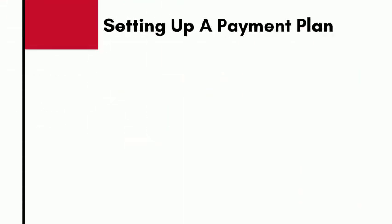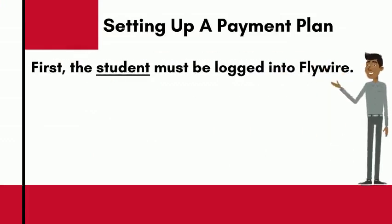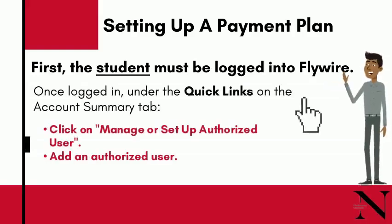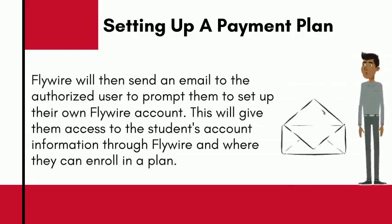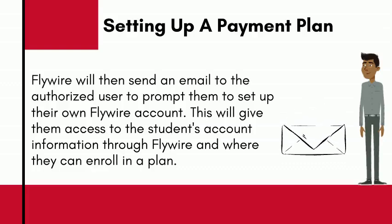Setting up a payment plan. First, the student must be logged into Flywire. Once logged in, under Quick Links on the Account Summary tab, click on Manage or Set Up Authorized User and Add an Authorized User. Flywire will then send an email to the authorized user to prompt them to set up their own account. This will give them access to the student's account information through Flywire and where they can enroll in a plan.